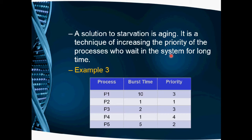The solution to starvation is called aging. Now we will go to the problem. Here we have five processes, P1 to P5, with execution time and priority values. Now we have to consider only priority to determine execution order.